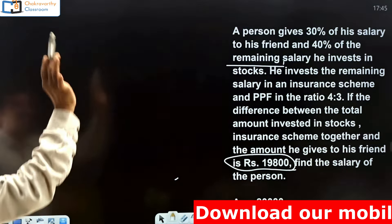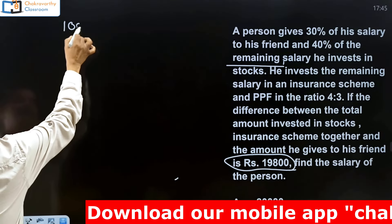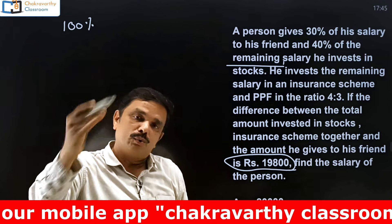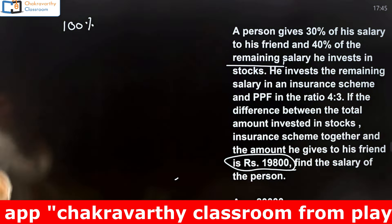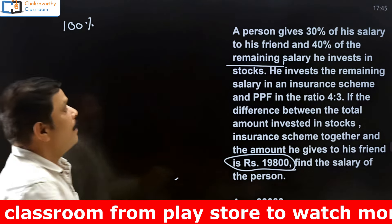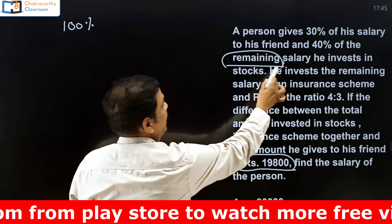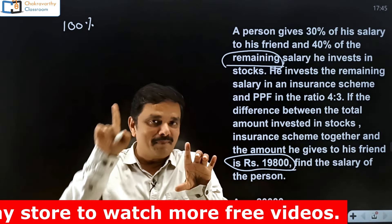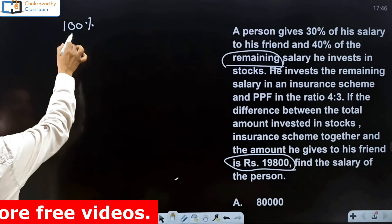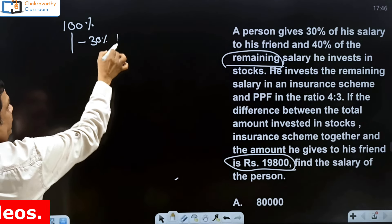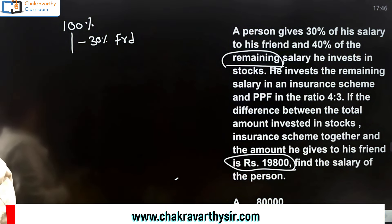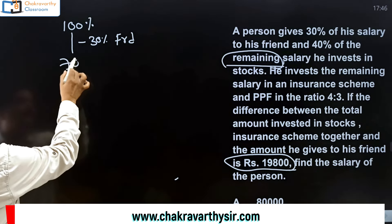Now let's start. I'm taking the total salary as 100%. From this 100%, what is the first condition? Gives 30% of the salary to his friend. So you need to find out what is the remaining salary after giving 30% to his friend. From 100%, minus 30% to his friend — the remaining is 70%.